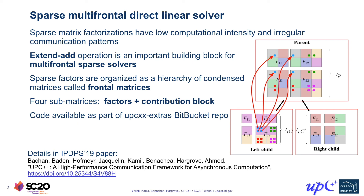A frontal matrix — looking at the right child matrix at the bottom — involves a little factorization step where you compute F11, use that to compute F21 and F12, and then those column and row matrices are multiplied together to update the trailing matrix block F22. The F22 matrix is the contribution matrix, whereas the other three are the factor matrices. F22 then needs to be used to update its parent in the elimination tree — the other computations that depend on the output of those multiplications.